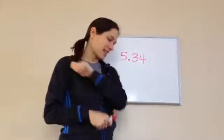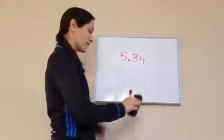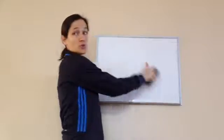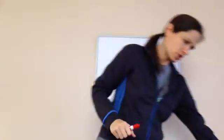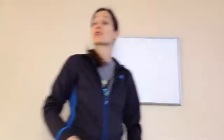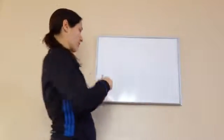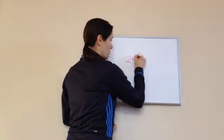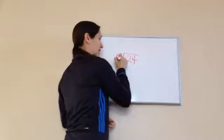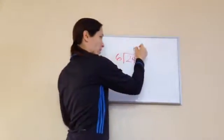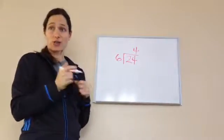Okay, this is fifth grade, lesson 34, and this is on division with zeros in the quotient. Do you remember what the quotient is? No. It's the answer to a division problem. So, for example, if I had 24 divided by 6, we would know 4 is the quotient, is the answer.